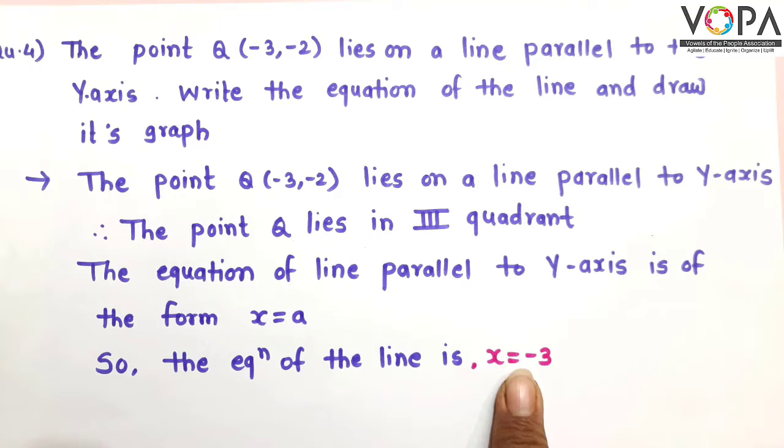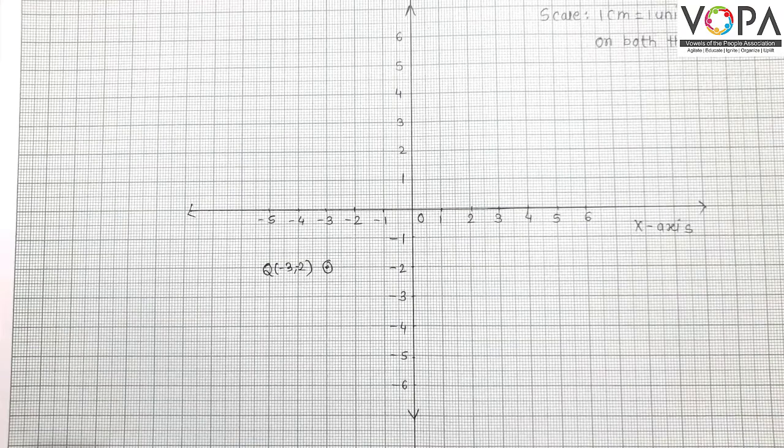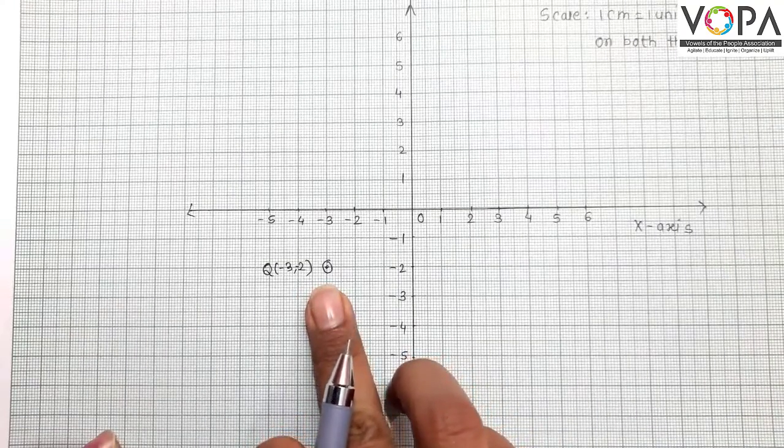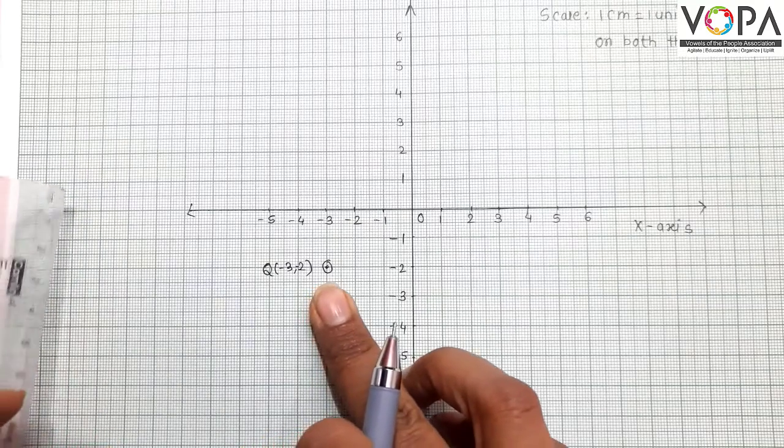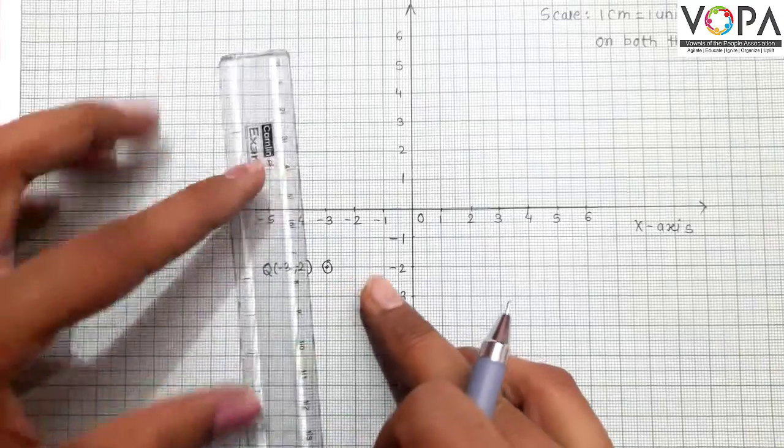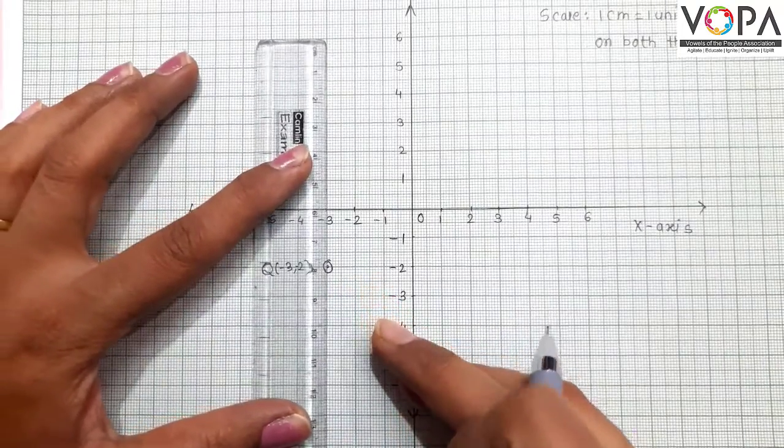And the graph is, here the point Q(-3,-2). And we draw a line passing through the point.